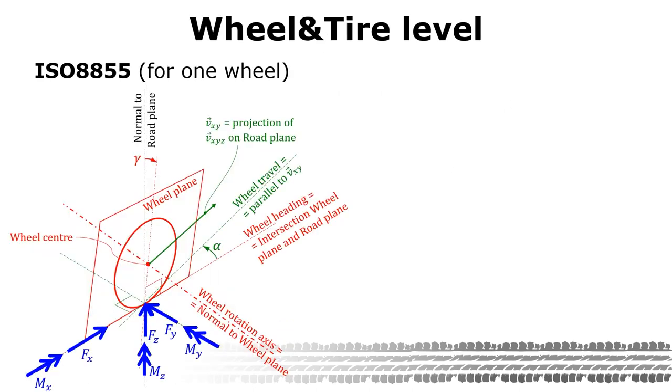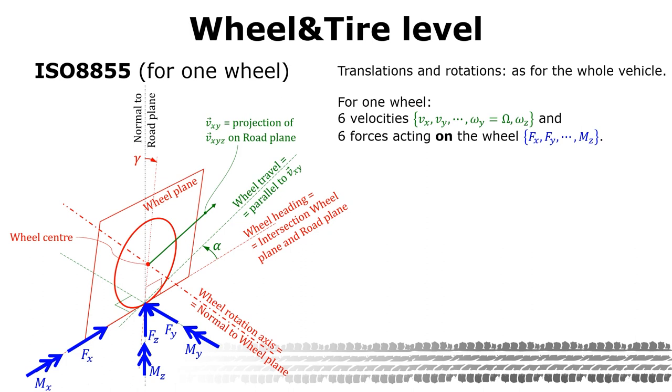Now we shall look at one single wheel. The wheel has its own x, y, z directions and those can be slightly rotated relative to the vehicle, rotated in yaw by steering and in roll by camber. So for the wheel, as for the vehicle, we have a set of three translational and three rotational velocities. And we have three forces and three moments.